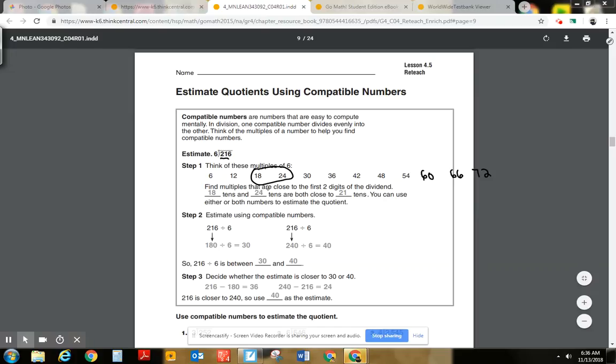So we're going to use these numbers. So I could estimate 216 to 180 or I could estimate 216 to 240. So my estimate is going to be between 30 and 40. So which one's closer? 40, right?